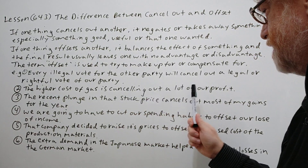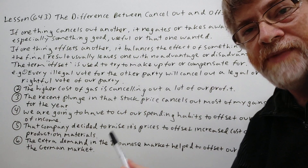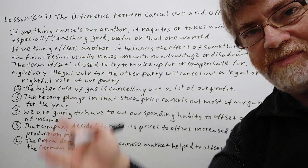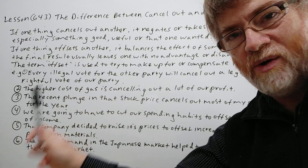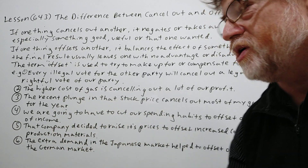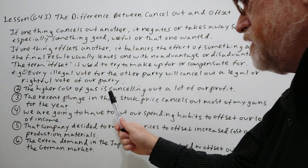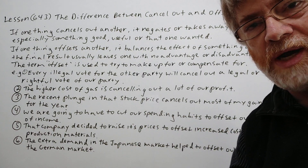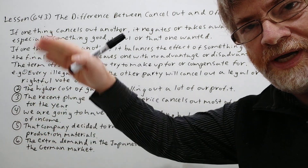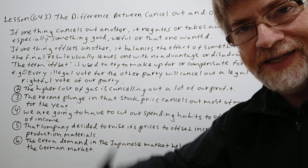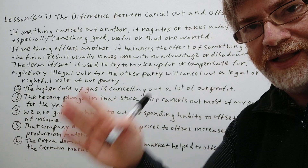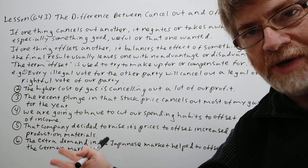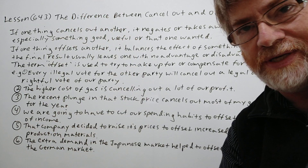Number two: the higher cost of gas is canceling out a lot of our profit. Your usual profit margin is really being hurt because it's taking away from that margin. Number three: the recent plunge in that stock price cancels out most of my gains for the year. If you had a portfolio and you thought you were making so much money, and suddenly that one stock went down a lot, you thought you had a good year — and not so much anymore because it canceled out those gains.